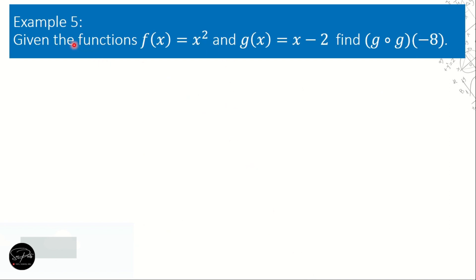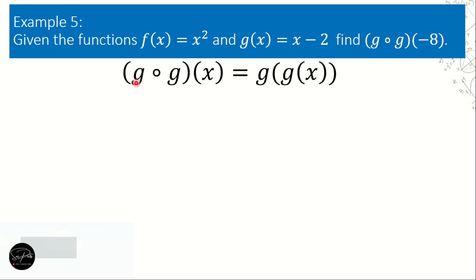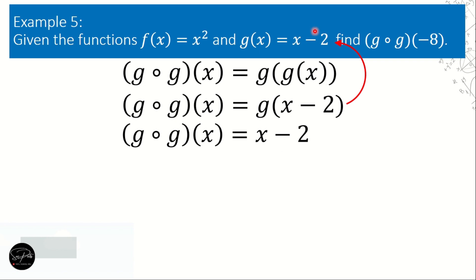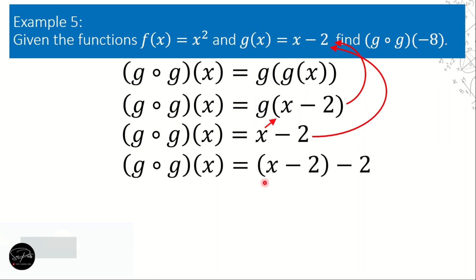Example number 5 uses the same two functions, but now we find g composite g of negative 8. Both the inner and outer functions are g, and the value of x is negative 8. Note that f of x is not used here. We represent it as g composite g of x equals g of g of x. We remove g of x and replace it with x minus 2. Then for the outer g of x, also x minus 2, we replace x with x minus 2, giving x minus 2 minus 2, which simplifies to x minus 4.